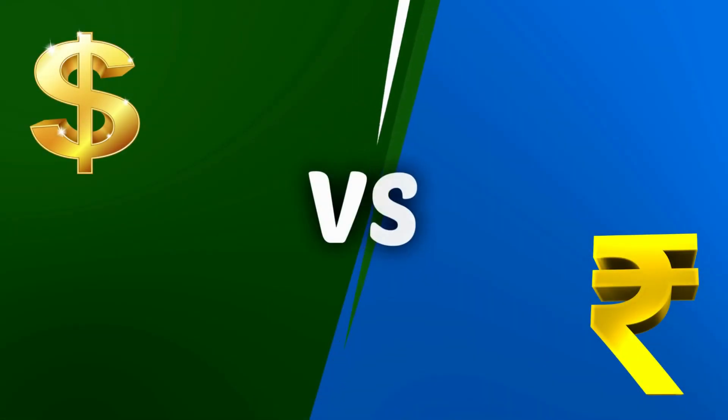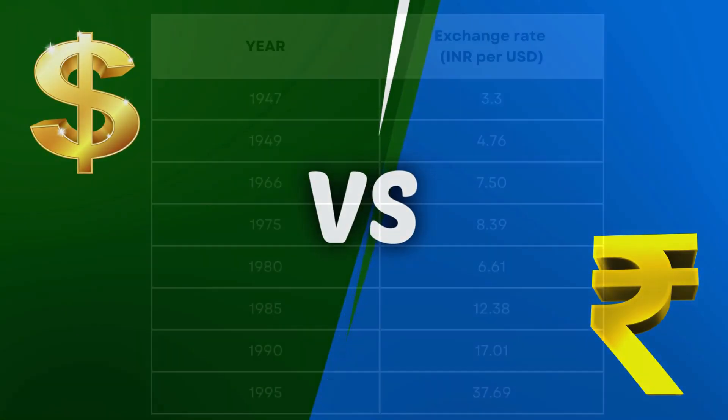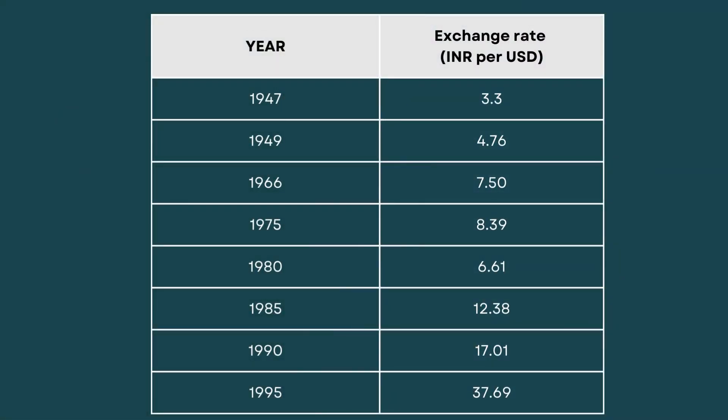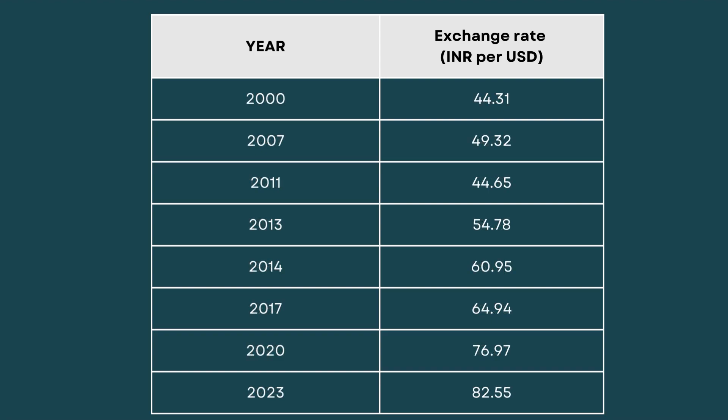Now let's compare the US dollar to the Indian rupee over time. At the time of independence, $1 was equal to ₹3.30. In 1995, $1 was equal to ₹37. In 2000, $1 was equal to ₹44. And now, $1 is equal to approximately ₹85.